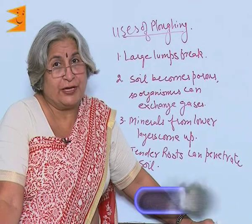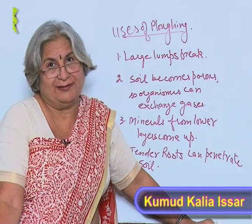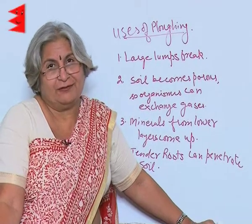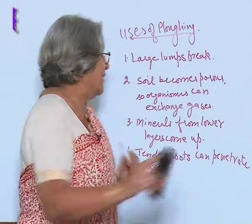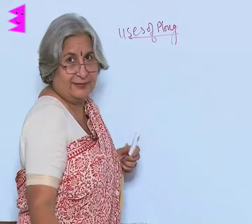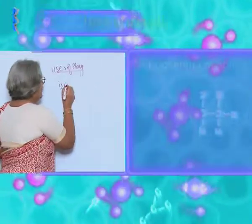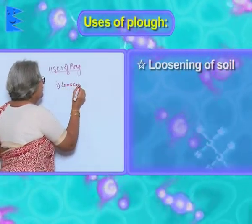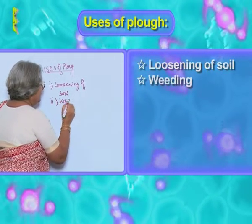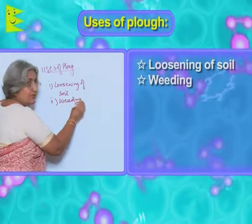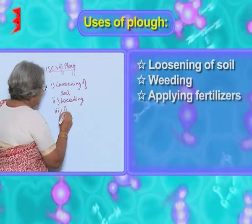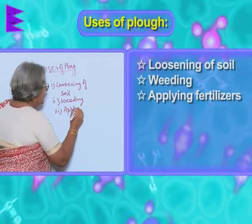Plough is not only used for loosening the soil, it is also used for weeding and for adding fertilizers. The uses of plough are: number 1, loosening of soil; number 2, weeding, that is removal of undesirable plants; number 3, applying fertilizers.